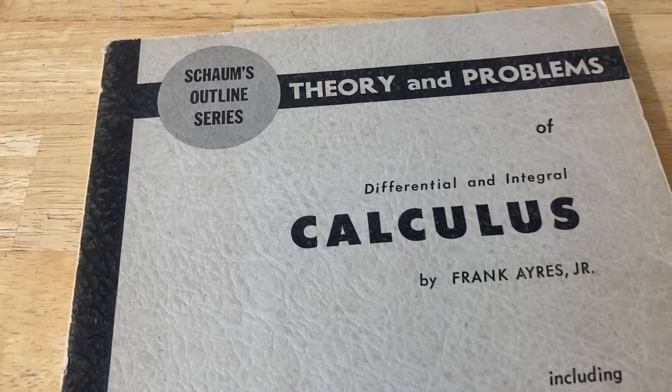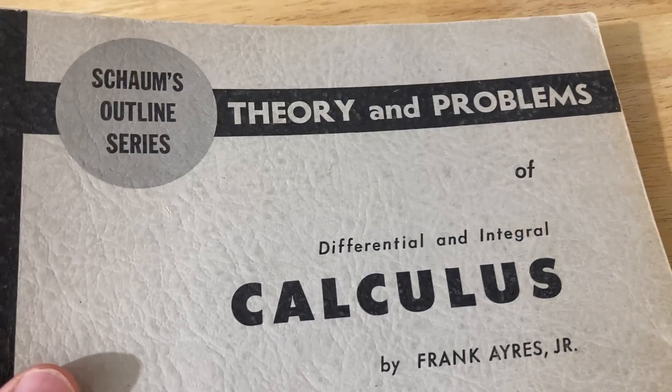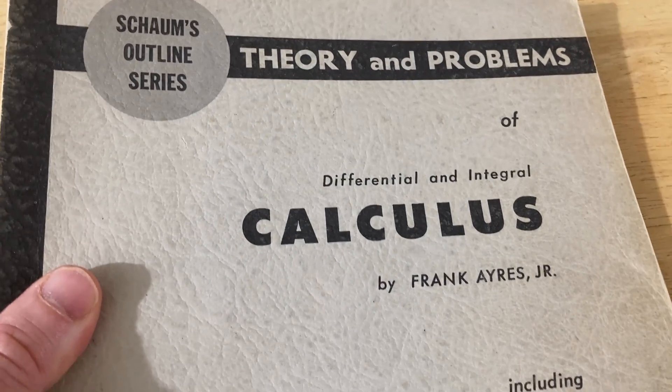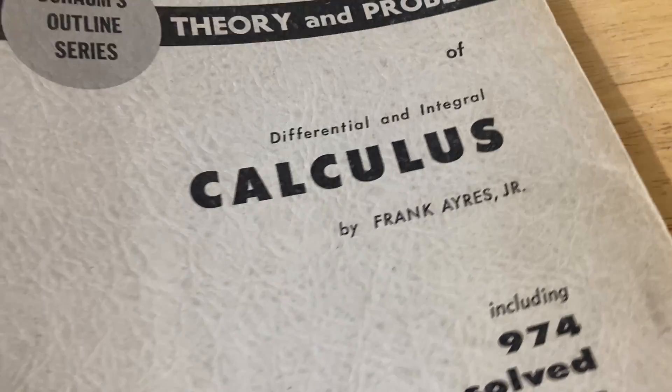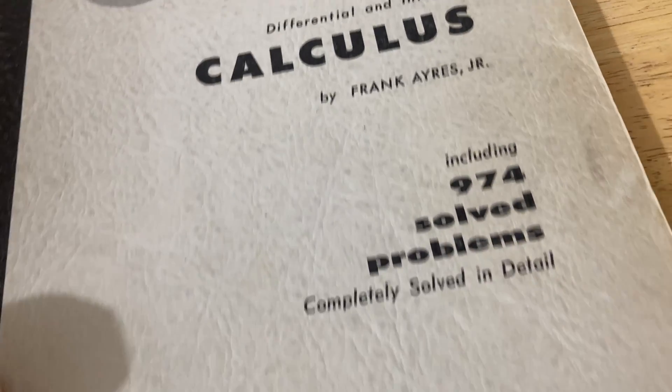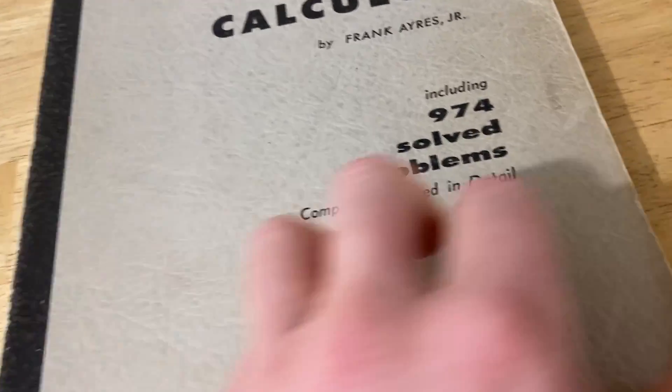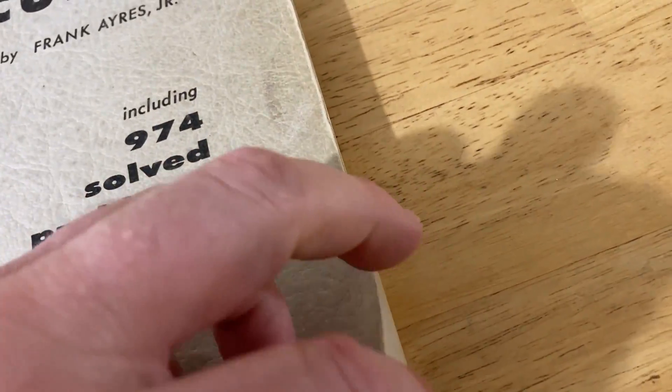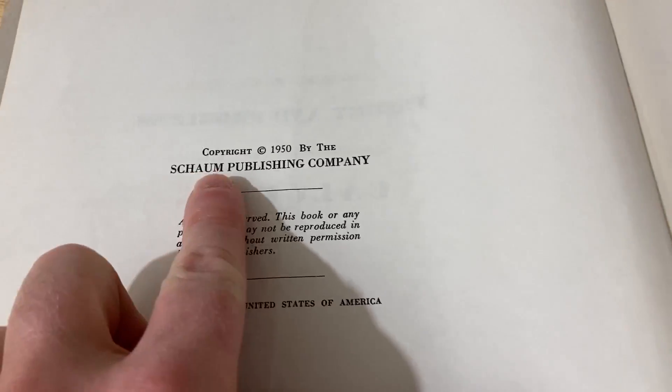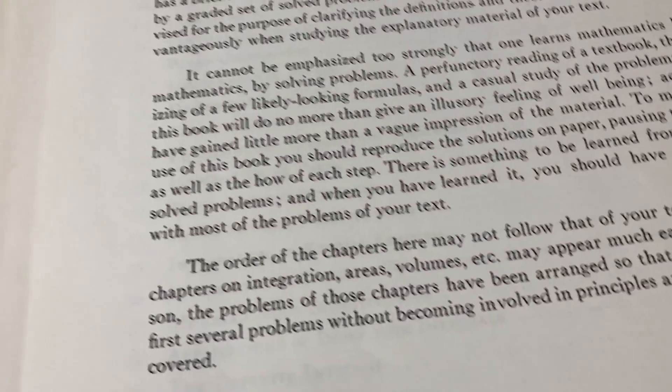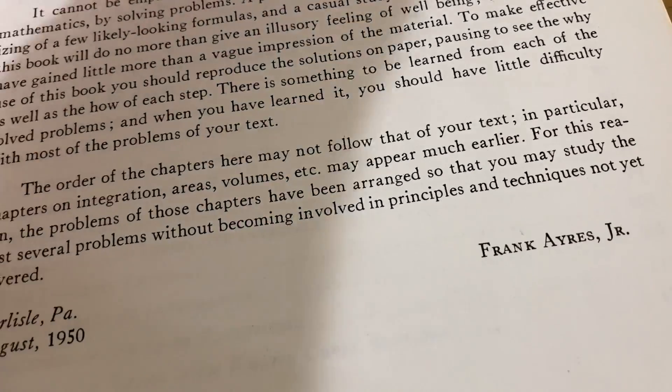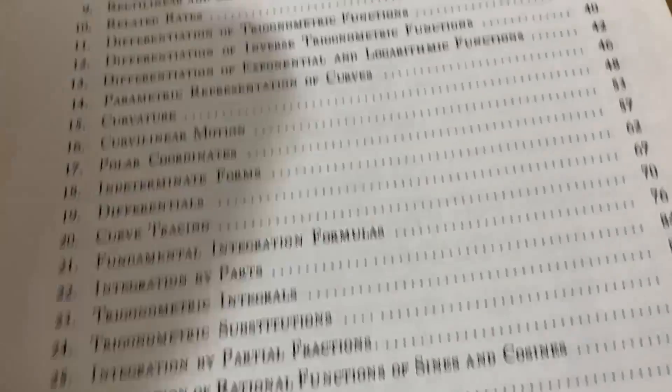All right, let's do something else right now. So the book we're going to look at in this video is the Schaum's Outline Series, Theory and Problems of Differential and Integral Calculus. And this one is by Frank Ayres Jr. This one has 974 problems. This one's really old. Let me show you. This one's from 1950. I don't even know they made Schaum's back then. I just assumed like they were from the 60s. But yeah, copyright 1950 by the Schaum's Publishing Company. Frank Ayres Jr.